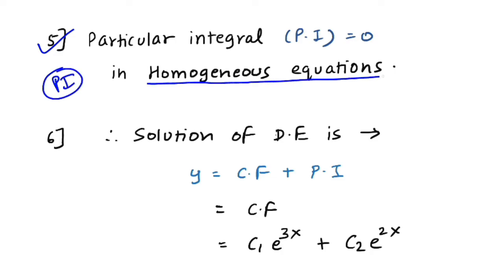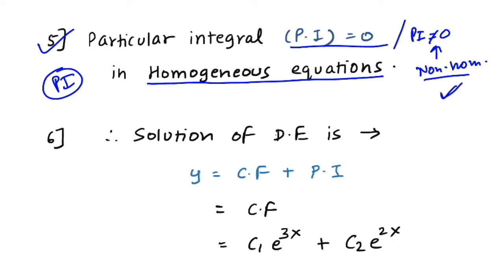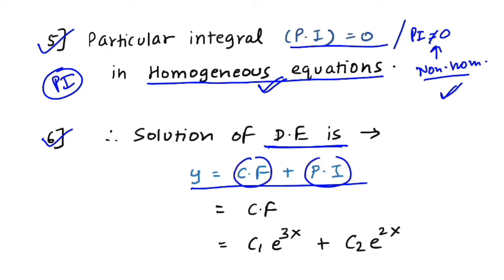There is a key benefit for homogeneous differential equations: the Particular Integral (PI) is always equal to 0. This is not the case for non-homogeneous differential equations, where you must compute PI separately. Therefore, the general solution is y = CF + PI = c₁·e^(3x) + c₂·e^(2x) + 0, where m₁ = 3 and m₂ = 2 are the roots of the auxiliary equation.